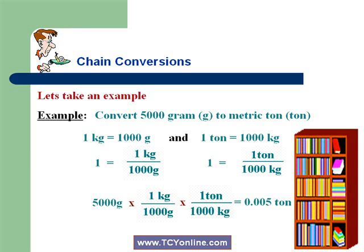While for 1 ton equals 1000 kilograms, we get 1 equals 1 ton over 1000 kilograms. Simply multiply this fraction by 5000. So we get 5000 grams × (1 kg / 1000 grams) × (1 ton / 1000 kilograms), which equals 0.005 tons. So 5000 grams equals 0.005 tons.